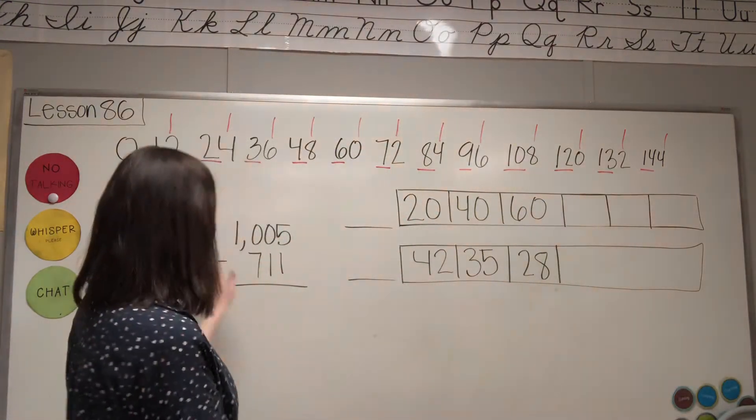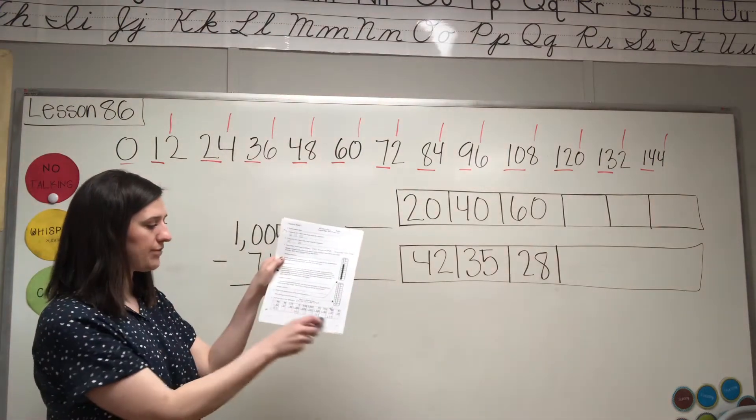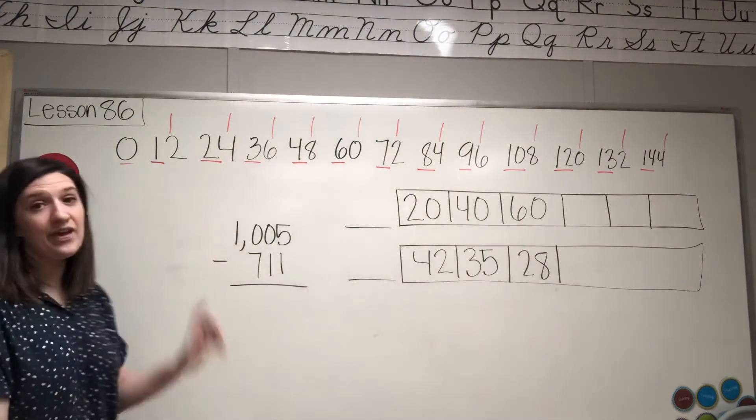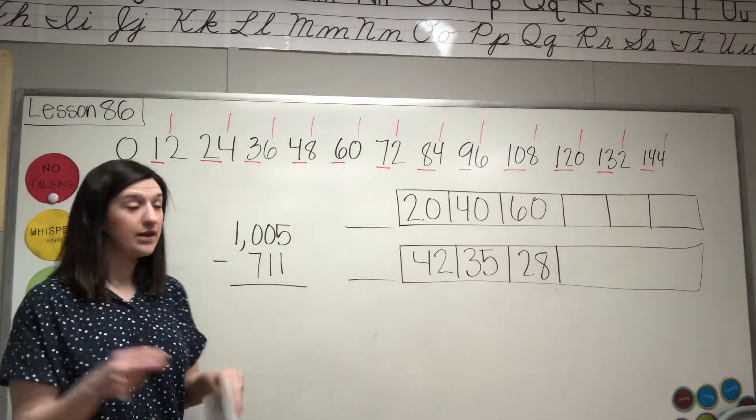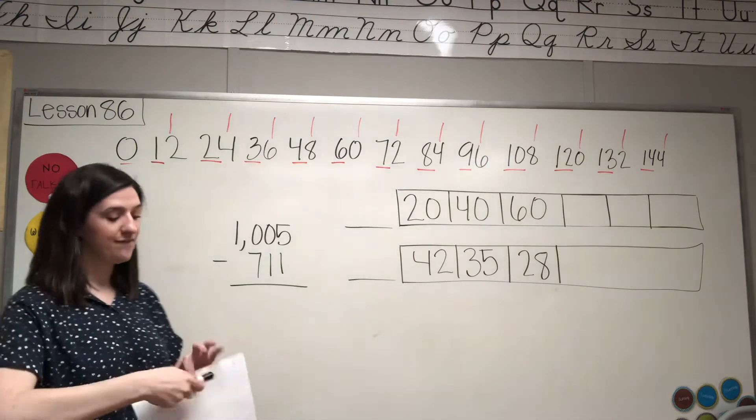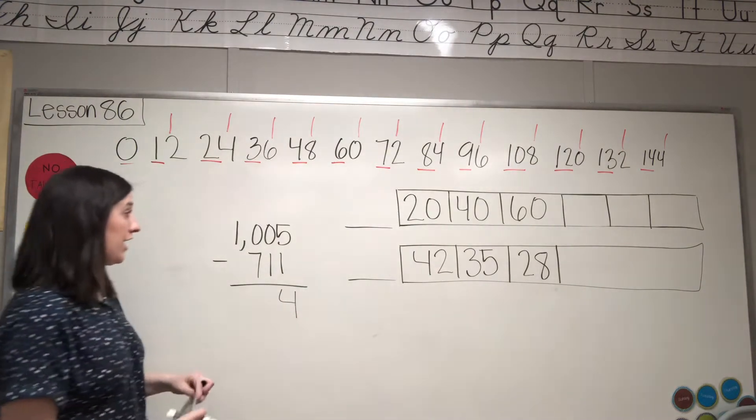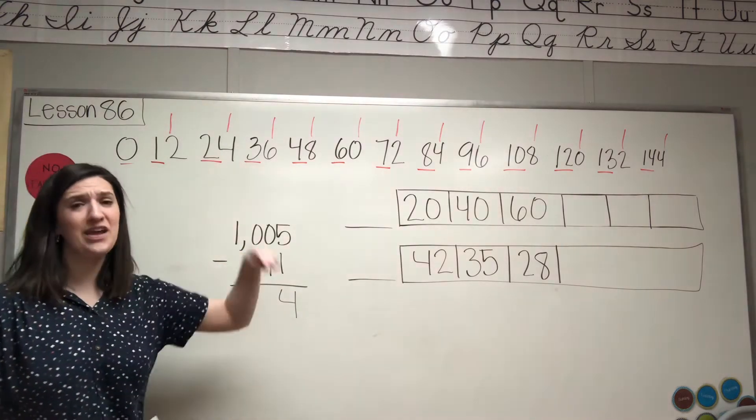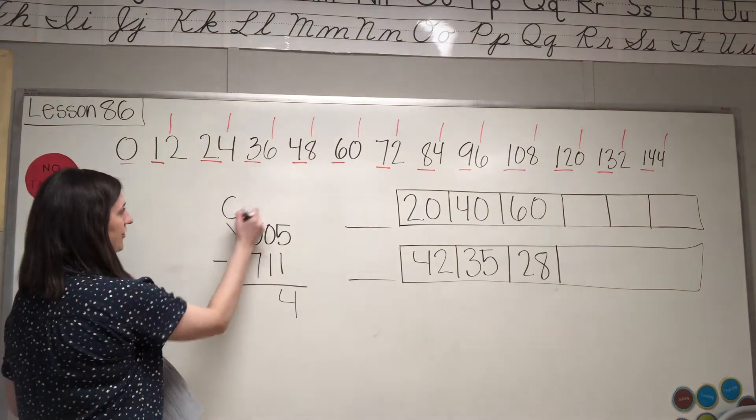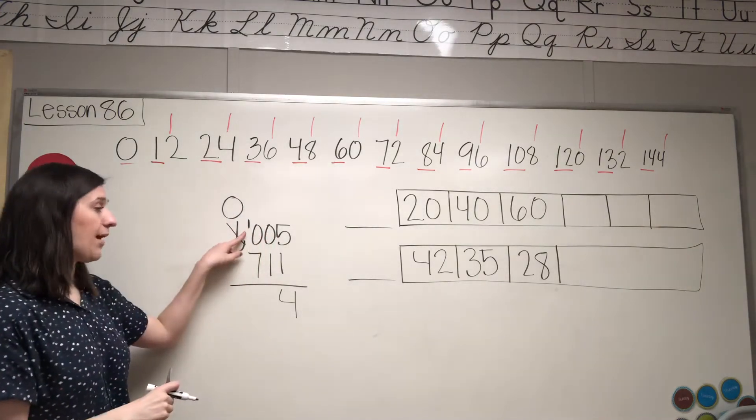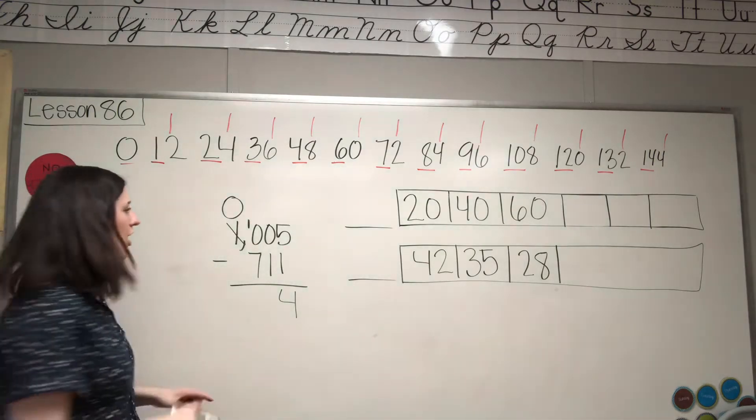I'm gonna do this fun subtraction problem with you, scooting all the way down to the bottom of the page. This is a subtraction problem, so we ask: is the big number on top? Yes. Subtract 5, 4. Is the big number on top? No. Regroup. Cross off the 1, leave it as a 0, put a 1 in front of the 0 so that it becomes 10. But does that help us? No. Cross off the 10.